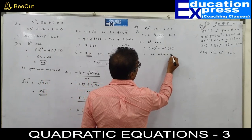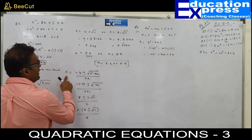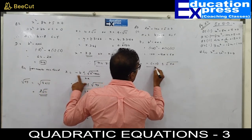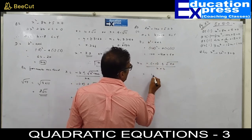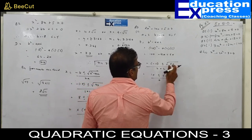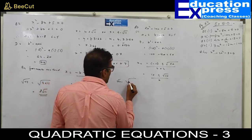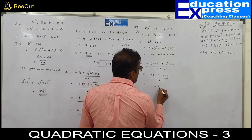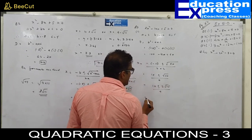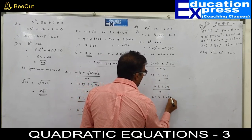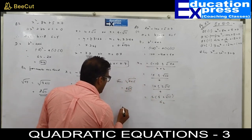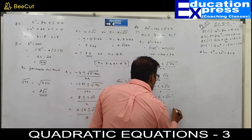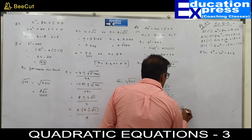Root 60 simplifies to root of 4 into 15. Square root of 4 is 2, so this can be written as 2 root 15. Substituting: 10 plus or minus 2 root 15, the whole upon 4. The factor 2 is common, giving 5 plus or minus root 15, the whole upon 2. Therefore x equals 5 plus root 15 upon 2, or x equals 5 minus root 15 upon 2.